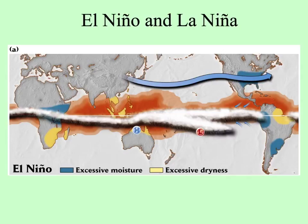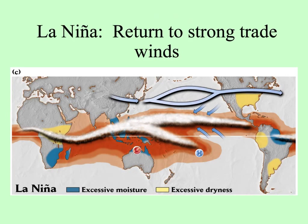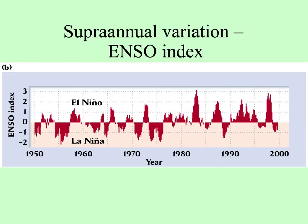This figure shows what happens during El Niño: more moisture than normal in places normally dry, and drier conditions in places normally wet. La Niña is sort of the return to normal, but even more so — wet places become wetter than usual and dry places drier than usual. The ENSO index can be plotted to show supra-annual variation, how these things fluctuate over the years.